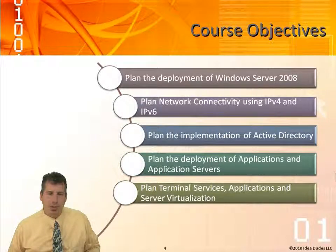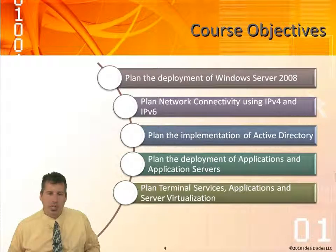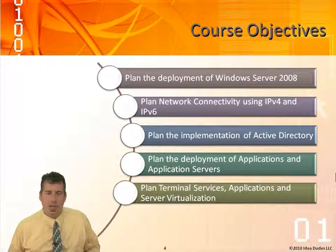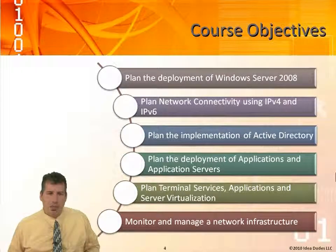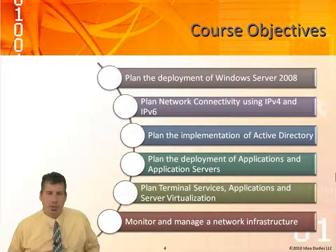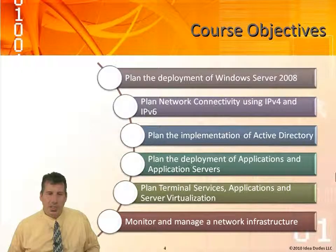Planning terminal services, application, and server virtualization. We'll be looking at Hyper-V and terminal server, and the different types of licensing — TS CALs, the client access licenses for the device and also for the user. We'll also be looking at Microsoft Application Virtualization, which is a replacement for SoftGrid. And we'll be looking at monitoring and managing a network infrastructure, using the performance monitor and Windows Resource Manager to help increase the overall throughput of our network.